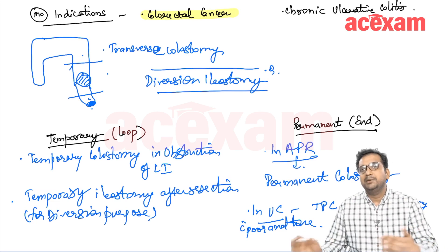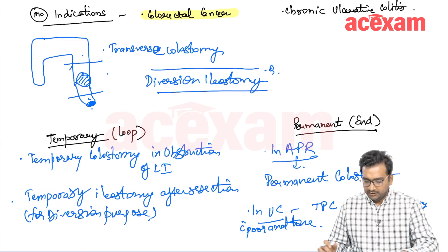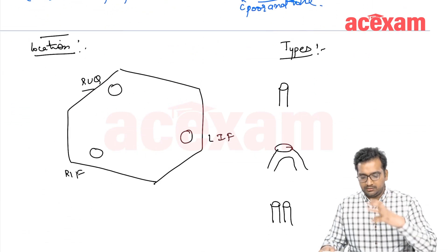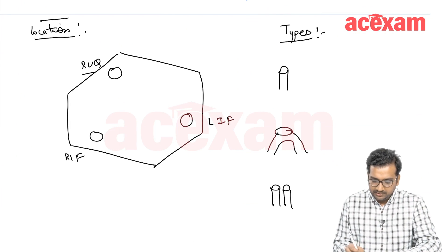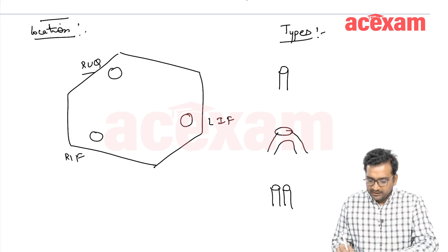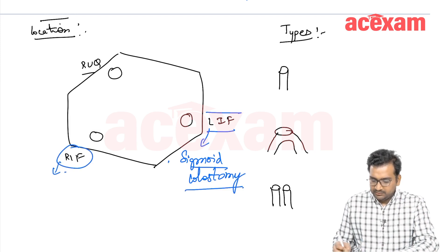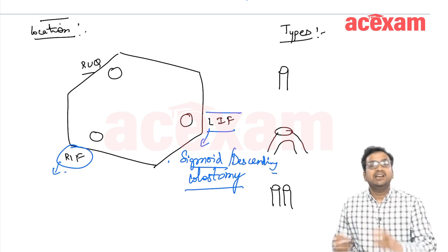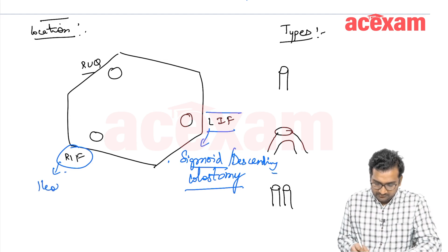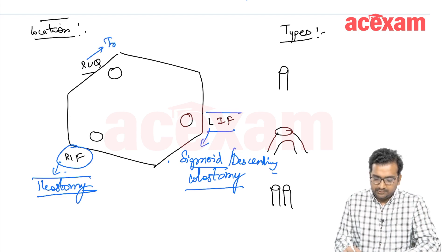Regarding locations: ileostomy or colostomy is generally placed at three important locations. Left iliac fossa is mainly for sigmoid colostomy. Right iliac fossa is mainly for ileostomy. The right upper quadrant is mainly for transverse colostomy.